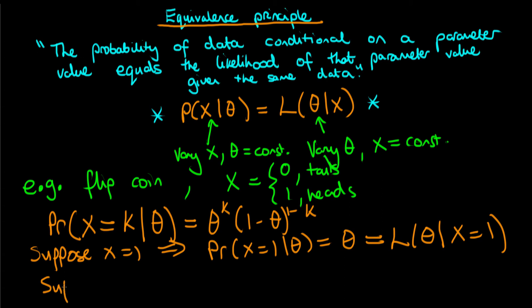Alternatively suppose that instead we said that x is equal to zero. Then in that circumstance we have that the probability that x is equal to zero given theta which is equal to one minus theta.